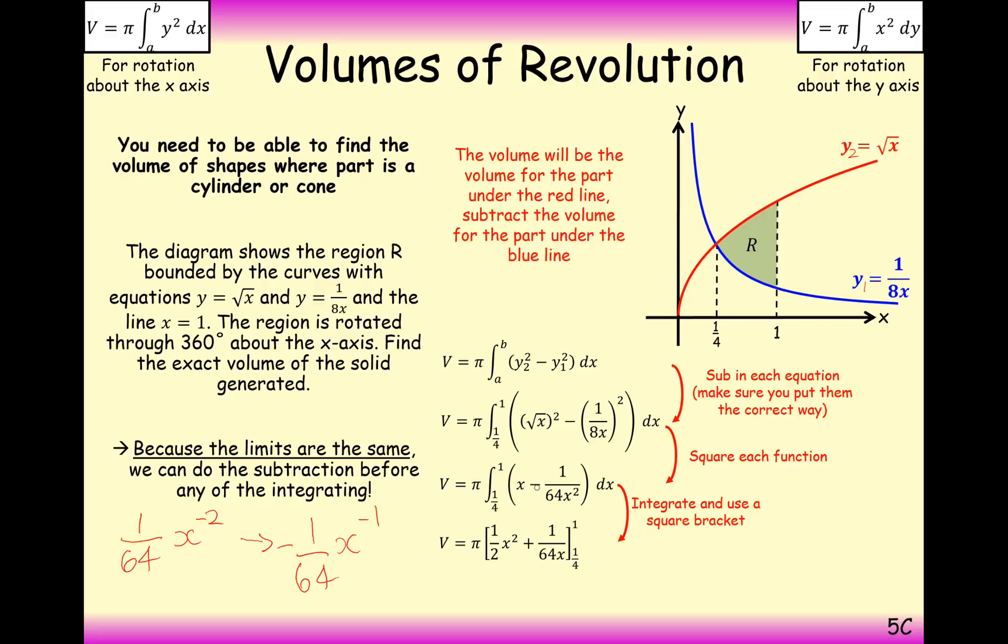And then we will integrate it. Probably the best way of integrating 1 over 64 is to think about it as 1 over 64x to the minus 2. Increase the power by 1. Divide by the new power. So the new power is going to be minus 1. Dividing by minus 1 is the same as timesing by minus 1. So it's minus 1 over 64. But given there's a minus there already, it's a double negative. So it makes this positive. x becomes x squared. But then divide by 2. So half x squared. And then all that's left for us to do then is substitute between the boundaries. And we get v equals 27 pi over 64.